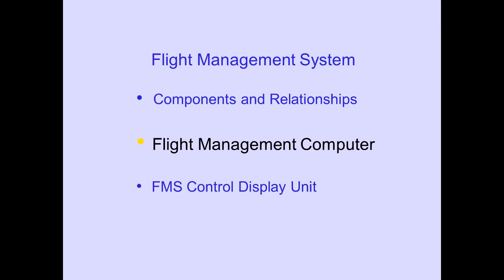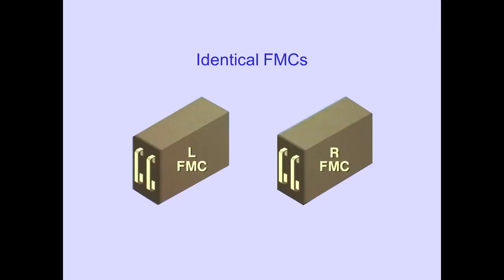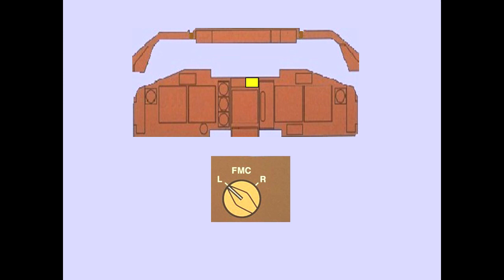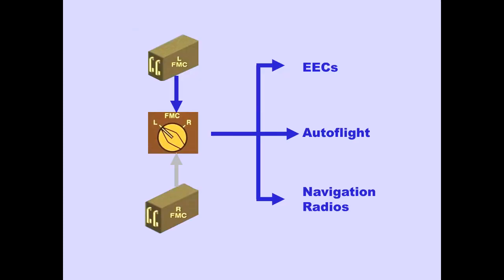Let's now discuss the flight management computer, or FMC. There are two FMCs. Both are identical. The FMC master switch is located on the center instrument panel and is used to direct left or right FMC information to the electronic engine controls, Autoflight, and navigation radios.